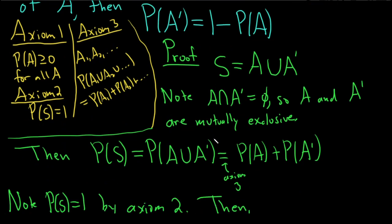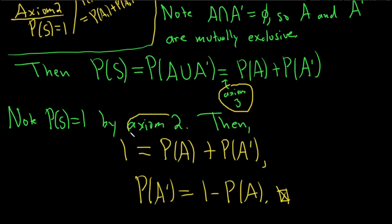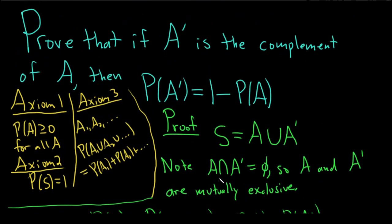We used two of the three axioms for this. So, interesting, right? We used axiom 3 right here, and then we used axiom 2 right here with the probability of S. So, yeah, nice problem. Good luck.